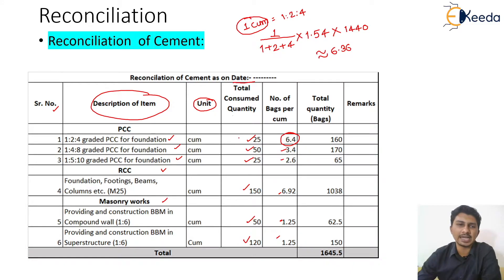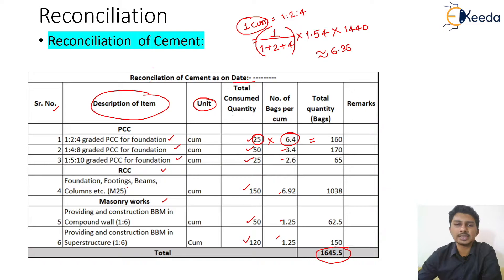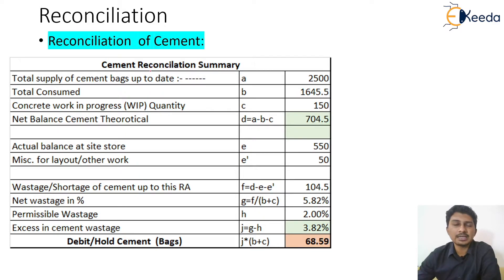Similarly, you need to calculate the values for all other proportions being used on site — for M25 and anything else, whatever proportion you have designed, you put it here and get the values. The total number of bags is calculated as total consumed concrete quantity multiplied by number of bags per cubic meter — this multiplication gives the total number of bags consumed to date. That's 1645.5 bags as the total quantity of cement bags consumed on site.